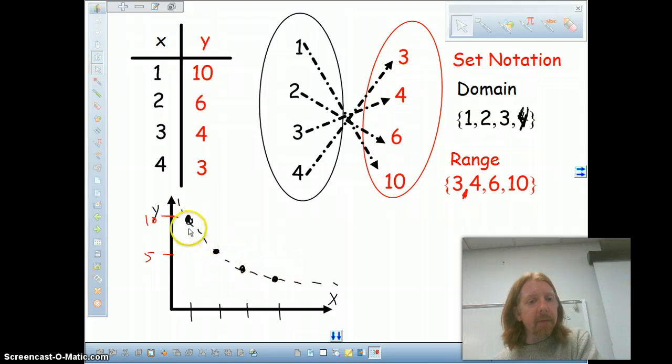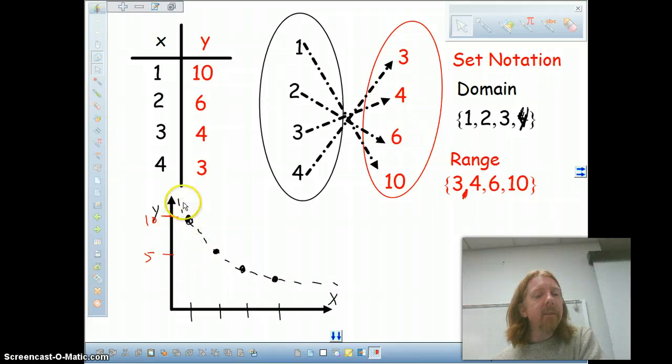When I look at my graph, even though it's four dots, the dotted line is not part of my function. I can see that for every single number along the x line there's only one y value. That's very important to note.